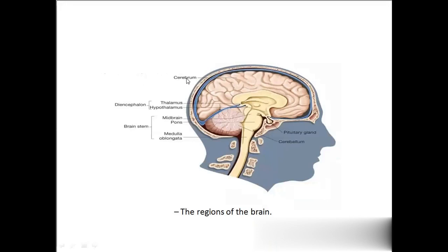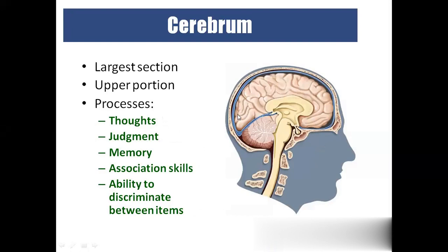The cerebrum is the largest portion of the brain, present in the upper portion. It controls major thoughts, reasoning, judgment, memory, association skills, and ability to discriminate between items. Higher thinking and cognitive skills — like reasoning, problem solving, judgment, memory, and thinking capacity — all reside in the cerebrum. The cerebral cortex forms the outer layer of the cerebrum and is composed of folds of grey matter.